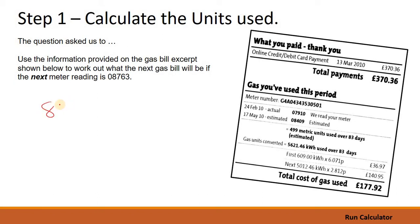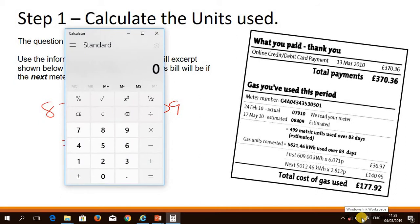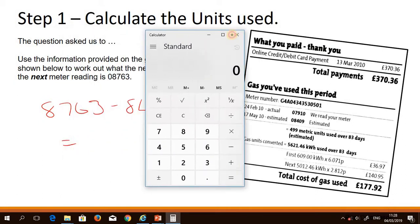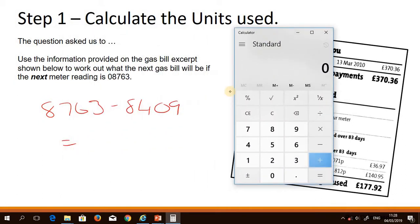So let's do that. 8,763 take away 8,409. And we'll use a calculator. You can do it in your head, of course, but I prefer to use a calculator just to be safe. So 8,763 subtract 8,409 equals 354.